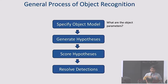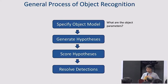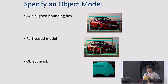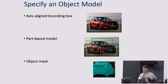The general process of object detection follows a pipeline. The first step is to specify an object model. There are multiple ways to do this. The simplest is to use an axis-aligned bounding box represented as four numbers — left, right, top, and bottom. This tends to work very well and fits many object types, but for very elongated objects it might not be the right model.